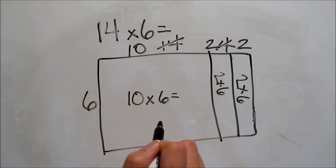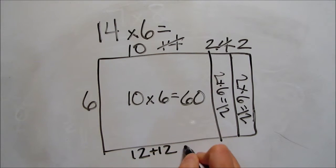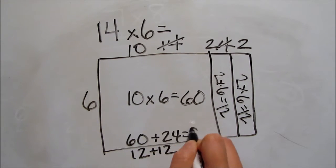2 times 6 equals 12, 2 times 6 is 12, so that's 24, and 10 times 6 equals 60, and 60 plus 24 equals 84.